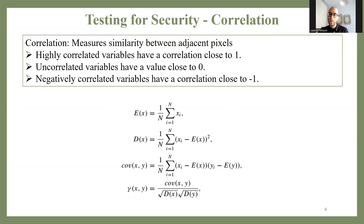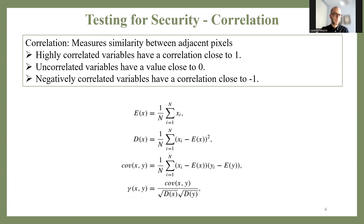Correlation has a value from minus one to one. If it is close to zero, it means that the two time series — in this case, two series of adjacent pixels — are not correlated. So the desired result should be close to zero for an encrypted image. While for highly correlated adjacent pixels in an original plain text image, the value is usually close to one, meaning that the pixels change value in kind of the same manner as we progress through the image. If the value is close to minus one, it means the two time series are negatively correlated.